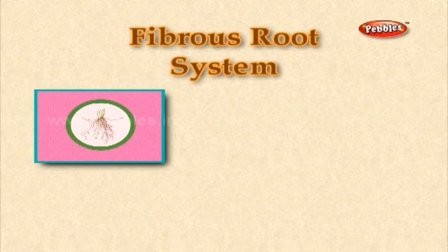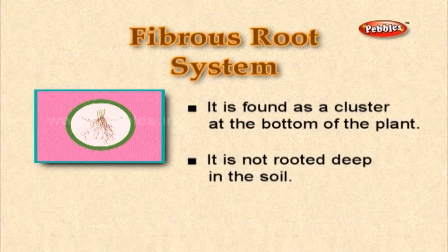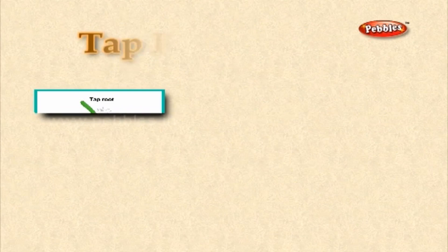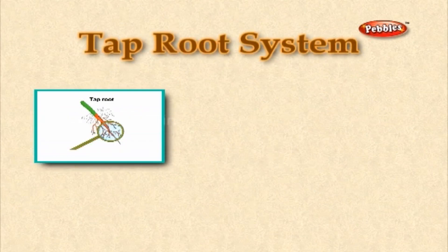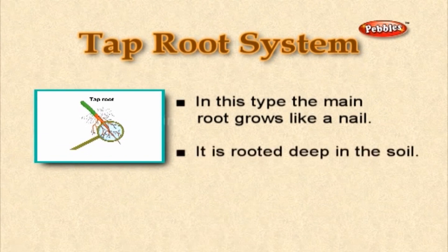Fibrous root system: It is found as a cluster at the bottom of the plant and is not rooted deep in the soil. Tap root system: In this type, the main root grows like a nail and is rooted deep in the soil.